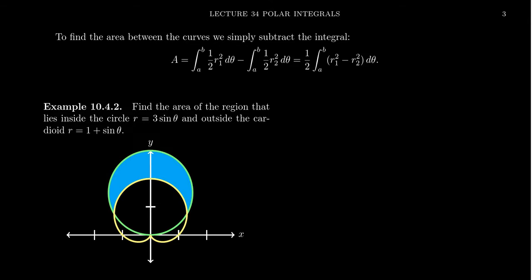In the previous video we saw how we could find the area under a polar curve, using the area of a circle sector to help us out. Now we want to find the area between two curves, like the illustration below. Specifically, we want to find the area of the region between the circle r equals 3 sine theta and the cardioid r equals 1 plus sine theta.